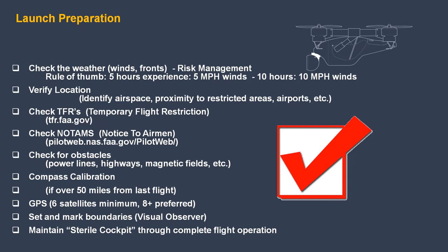Launch Operations. How do you plan a drone flight? You'll need to check the weather, winds, and fronts — that's part of risk management. Rule of thumb for experienced pilots: 50% of the max forward speed of the aircraft. Verify your location, identify the airspace, proximity to restricted areas and airports. Check TFRs — temporary flight restrictions — at tfr.faa.gov. Use apps to check the location for TFRs and NOTAMs. Check for obstacles such as power lines, highways, and magnetic fields.